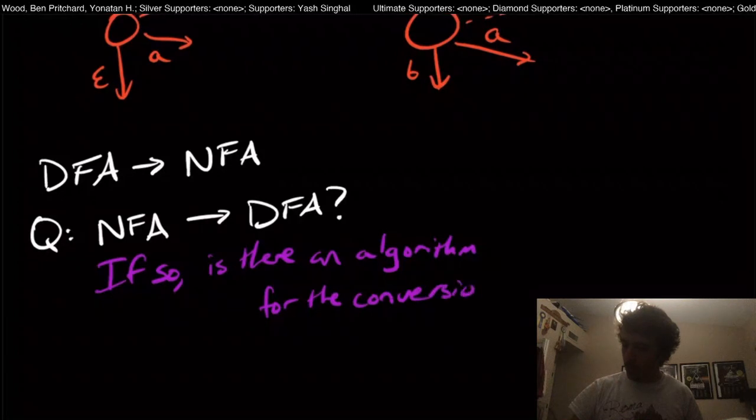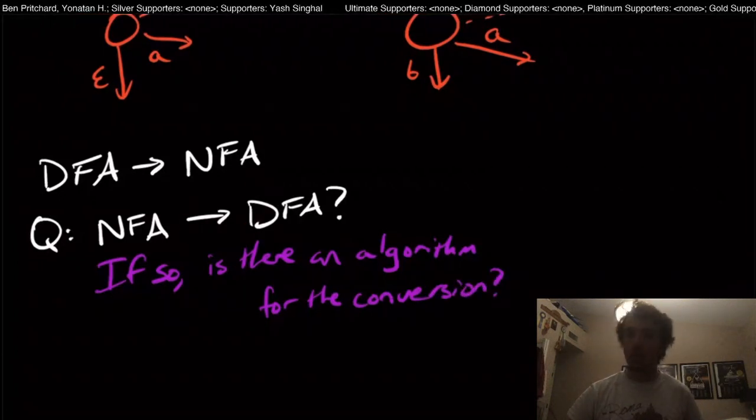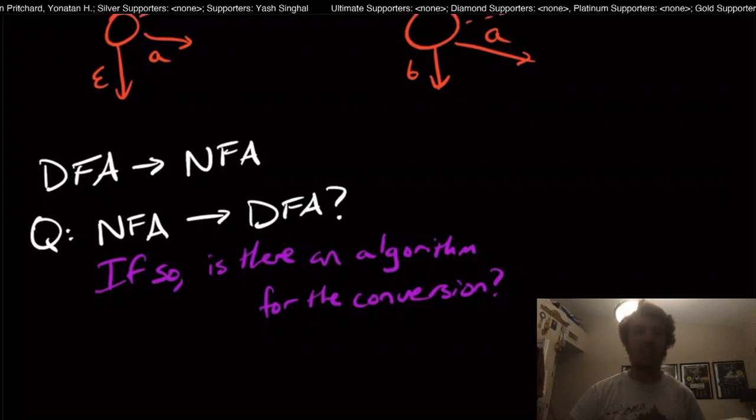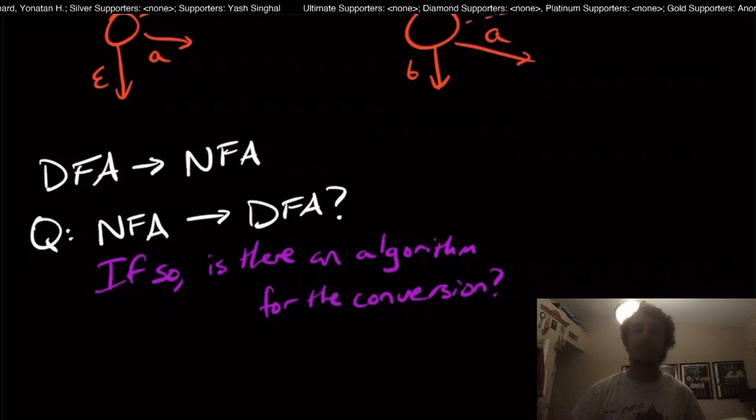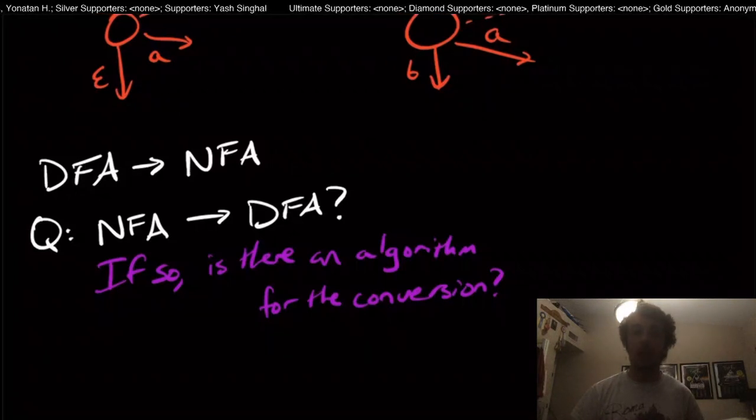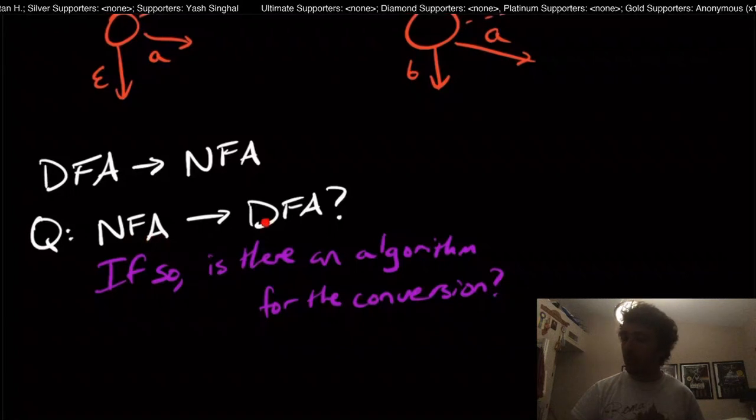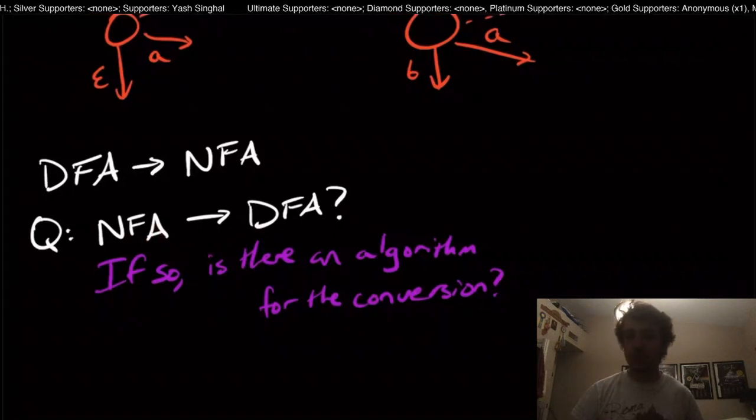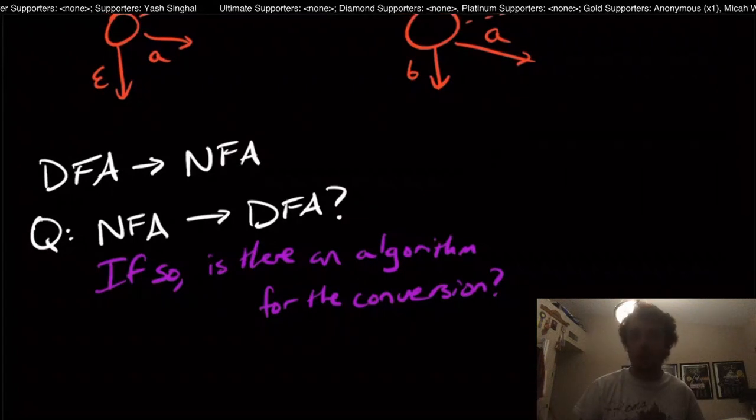Because remember, the whole idea of whether something, a language is regular or not, is whether a DFA actually exists for the language. We don't have to actually provide the explicit DFA, but rather, we just have to assert its existence. We could say, well, there is a process that does this conversion, but it may be that we just don't have an algorithm for it.